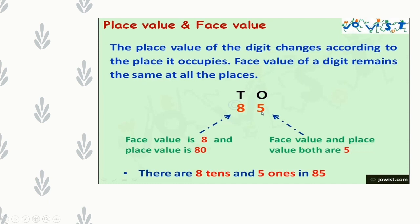Here, we are given a number 85. 5 is in the 1's place and 8 is in the 10's place. The face value of 8 is 8 only — it may be in the 10's place, but the face value of 8 is 8 only, its value will never change. The place value of 8 is 8 into 10, which is equal to 80. The place value of 5 is 5 into 1, which is equal to 5, and the face value of 5 is 5 itself. There are 8 tens and 5 ones in 85.